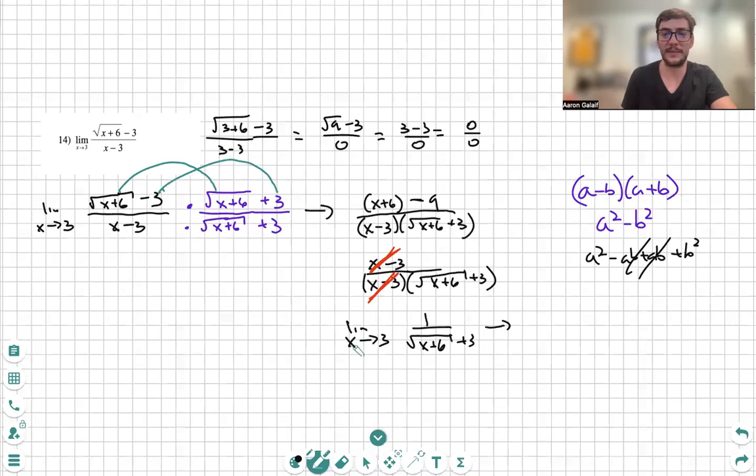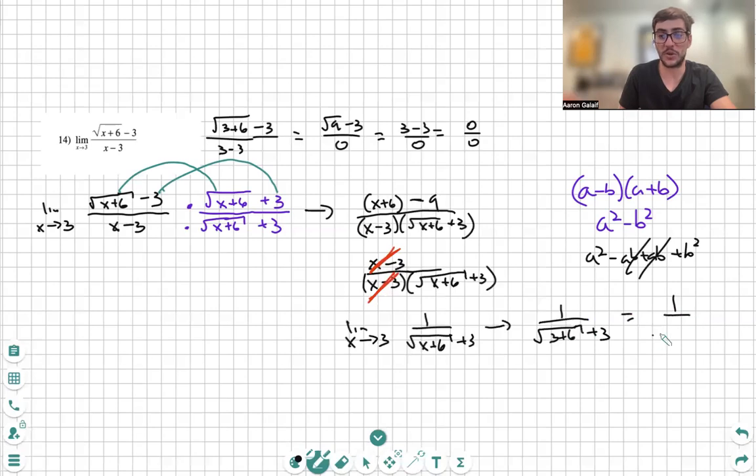So, limit as x approaches 3, we plug in 3 for x, 3 plus 6 plus 3, and we slowly solve it out. And we slowly see that our limit of this function as x approaches 3 is equal to 1 over 6.